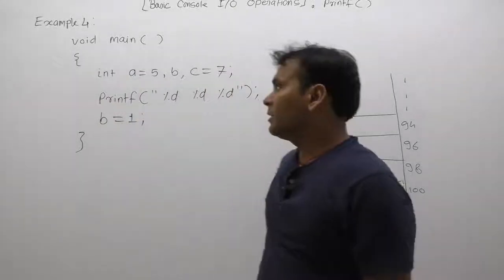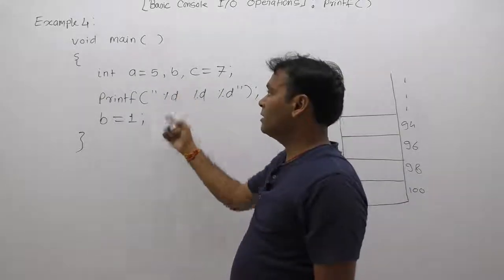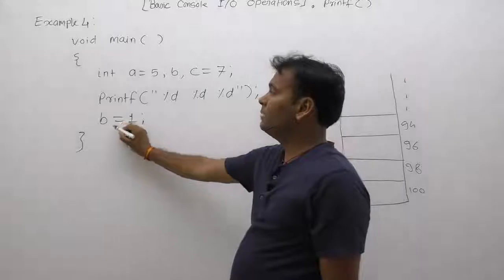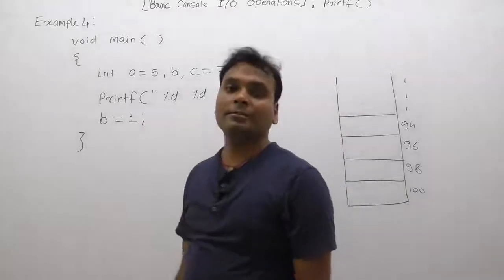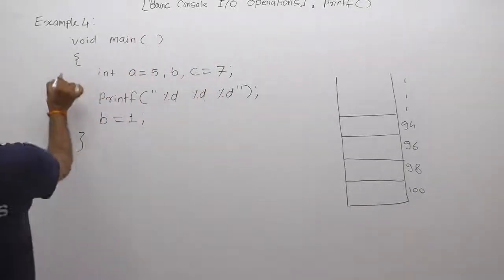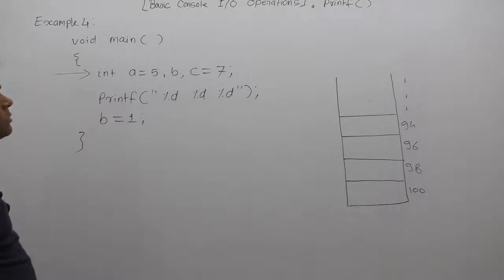Now let's see another example. In the previous example we were not using variable b, but here we are using variable b after printf. What happens in that case? Again, first of all, allocating memory space for all used local variables.